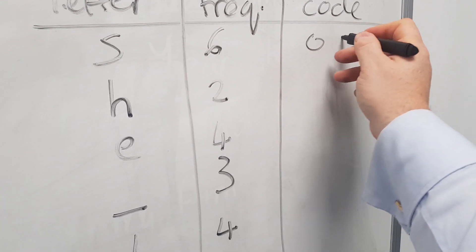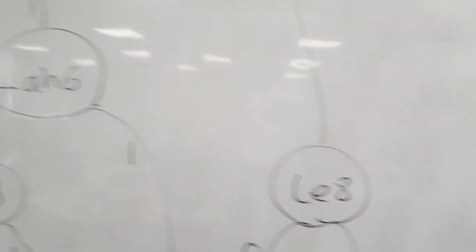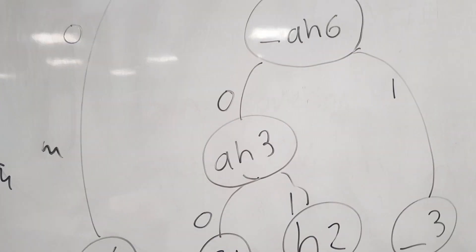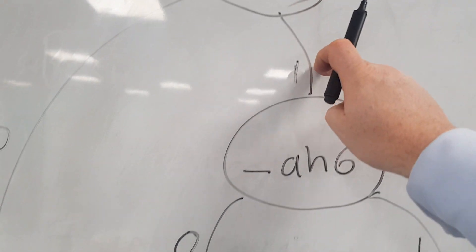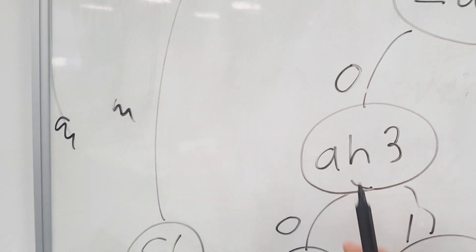And then the code for A, which is the least frequently occurring item, will be 0100.